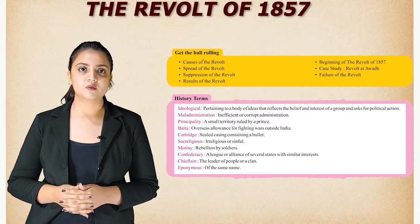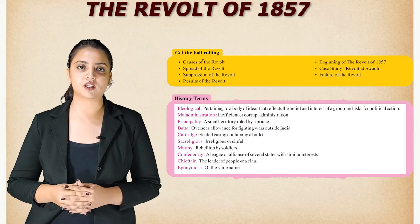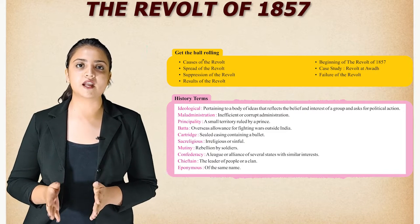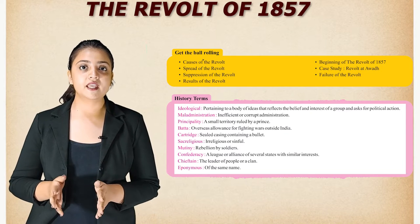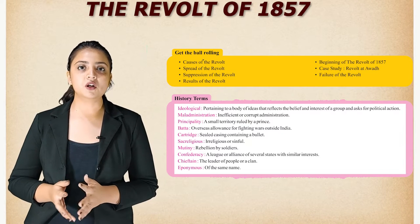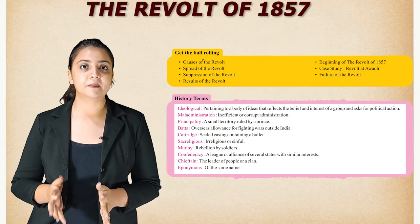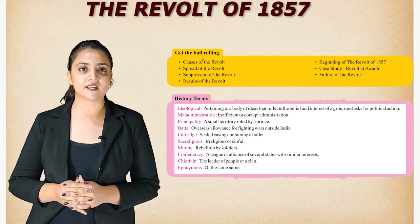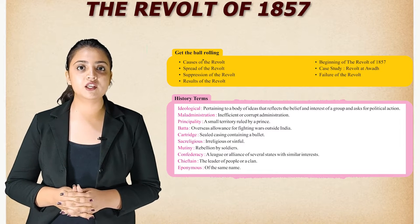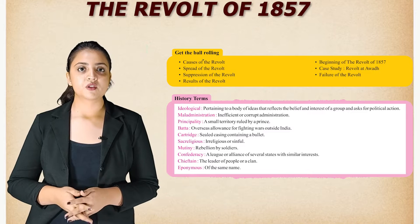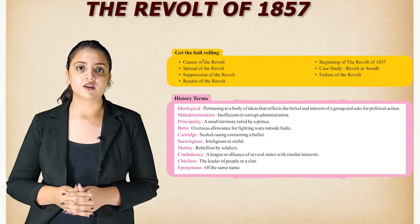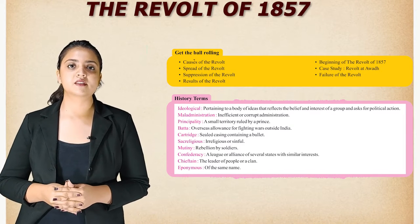First, let us familiarize ourselves with some history terms. Ideological: pertaining to a body of ideas that reflects the belief and interest of a group and asks for political action. Maladministration: insufficient or corrupt administration. Principality: a small territory ruled by a prince. Bhatta: overseas allowance for fighting wars outside India. Cartridge: sealed casing containing a bullet. Sacrilegious: irreligious or sinful. Mutiny: rebellion by soldiers. Confederacy: a league or alliance of several states with similar interest. Chieftain: the leader of people or a clan. Eponymous: of the same name.